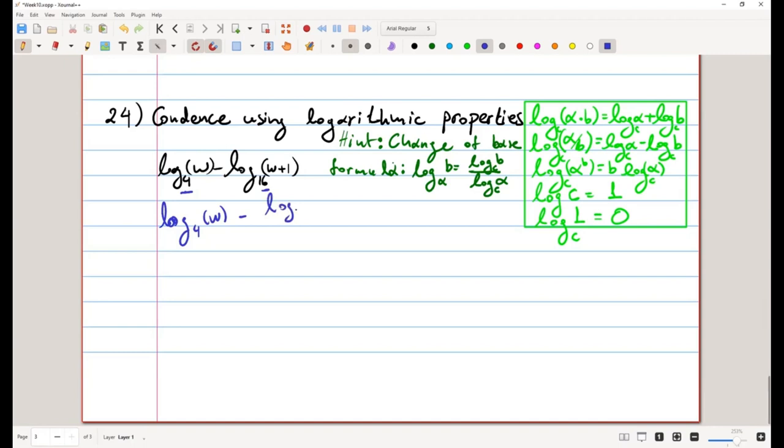And then for this one, I will need to write it as base 4. So we'll have a quotient of logarithms of base 4, where the first one, the numerator, will have as argument the same argument as the logarithm I had previously, so it'll be w plus 1. And the denominator will have as argument the previous base, so 16.